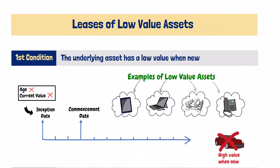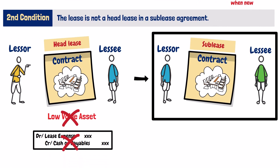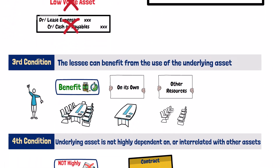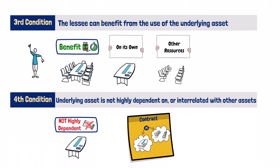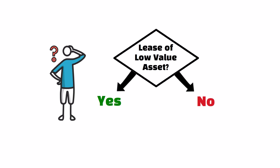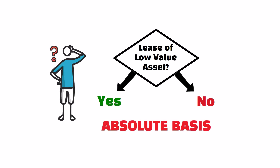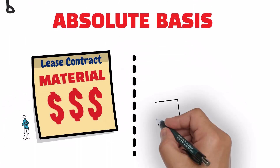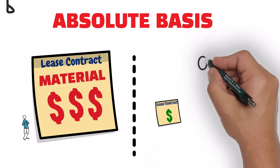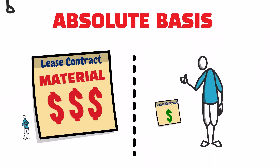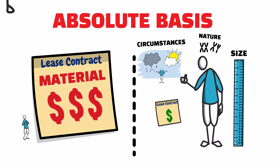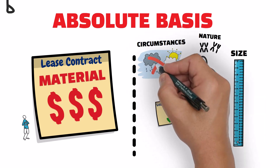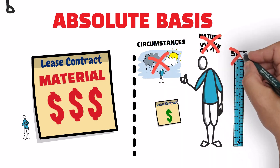These are the four conditions for assessing whether a lease qualifies as a lease of a low value asset. Note that this assessment should be done on an absolute basis, regardless of the materiality of those leases to the lessee. In other words, the size, nature, or circumstances of the lessee are ignored in that assessment.